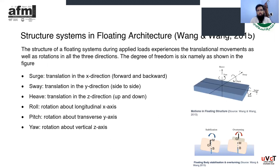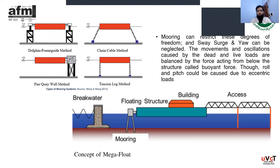Floating structures experience basically six kinds of forces — three translation motions and three rotational motions. Surge, sway, and heave are the translation motions, and roll, pitch, and yaw are the rotational motions. Mooring is very important for any floating structure to tie to the strata of the sea or water body, which balances these forces through buoyant force and prevents an eccentric condition.